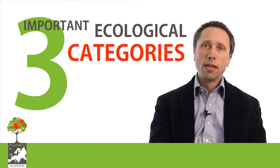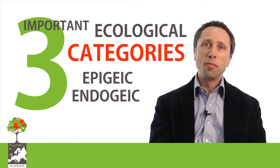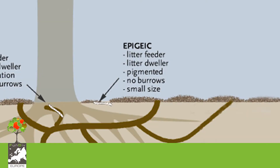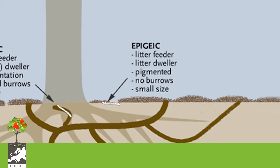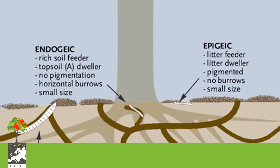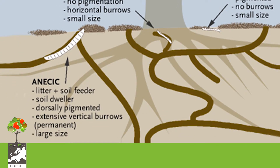In European forests there's not so much diversity of earthworm species, but in all the forests we have three important ecological categories. We have epigeic earthworms, endogeic earthworms and anecic earthworms. Epigeic earthworms live in the litter and feed on this litter, while endogeic earthworms live in the soil and make burrows to eat soil organic matter. Anecic earthworms make vertical burrows where they live, and during the night they come to the surface to feed on the litter.